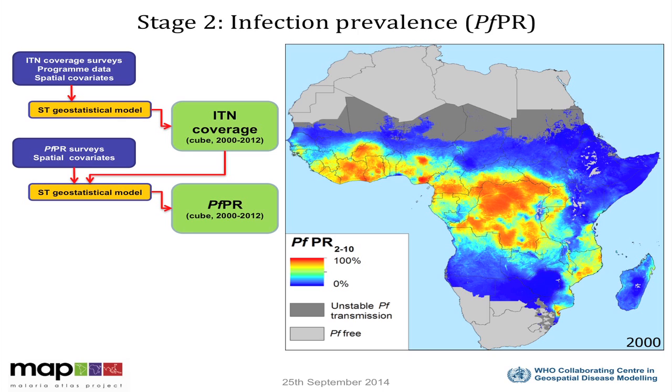The second stage moves on to modeling infection prevalence — the metric PFPR, or parasite rate — simply the proportion of the population in a cross-sectional sense that are infected at a given point in time. We bring to bear the large databases maintained in the Malaria Atlas Project on PFPR surveys, each georeferenced with a known time point; we have about 22,000 of those for sub-Saharan Africa since 2000. We also bring in spatial and spatio-temporal covariates, and importantly we link this to the continuous cube of ITN coverage from stage one, feeding these into a complex spatio-temporal geostatistical modeling framework.